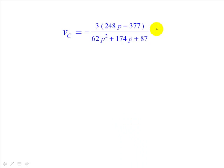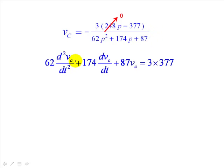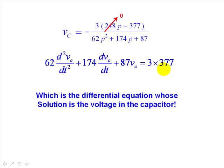This we copy directly from the calculator. We can write that, knowing that this term is zero, as we saw in class. The differential equation whose solution is the voltage in the capacitor with the coefficients 62, 174, and 87. Negative, negative, it's positive. 3 times 307 is 921. And that is the solution to the problem. At least to this part, of course.